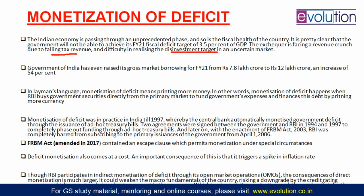The market is very uncertain now. In fact, the Government of India has raised its gross market borrowings from 7.8 lakh crore to 12 lakh crore — an increase of 54 percent. So the fiscal deficit target of 3.5 percent is going to be breached. How does the Government of India fulfill its deficit? That is related to the topic of monetization of deficit.